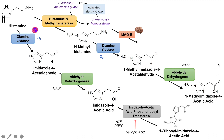Both of these metabolites can be excreted in the urine, allowing the body to remove histamine. That's how we actually process and get rid of histamine. I hope you found this lesson on histamine synthesis and metabolism helpful. If you did, please like and subscribe for more videos. If you have any questions, please leave them in the comments below — thank you so much for watching.